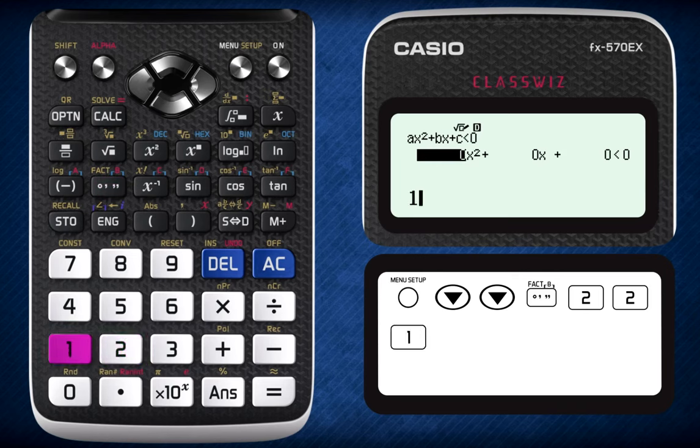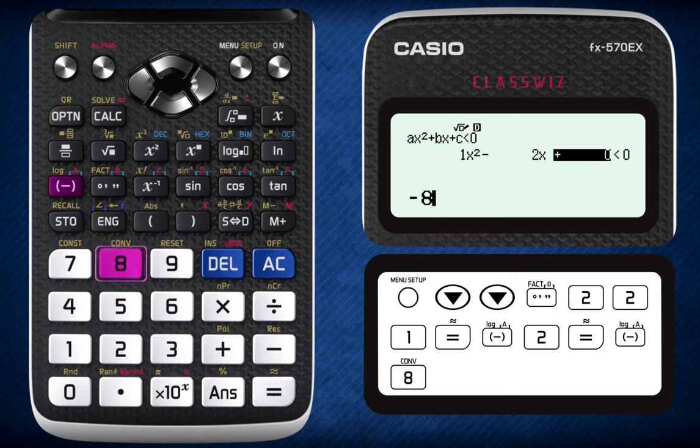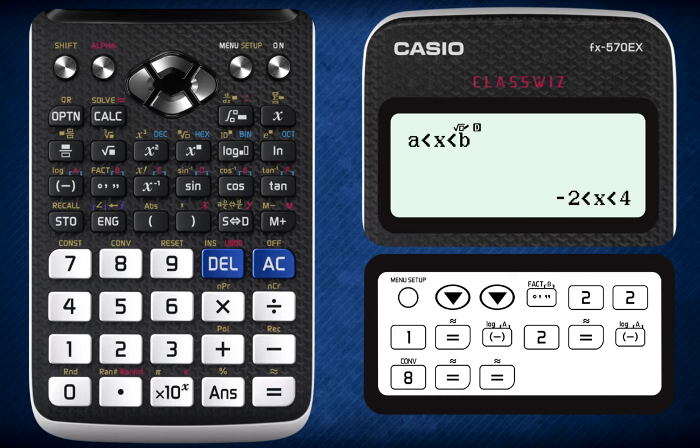Enter the value of 1 as the coefficient of x squared, negative 2 as the coefficient of x, and negative 8 as the constant. Pressing equal again gives you the range of x that satisfies the inequality. And that's it.